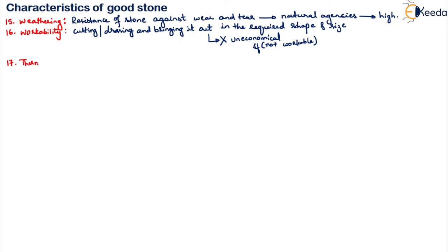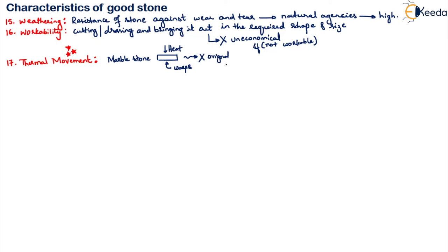The last property is thermal movement. When one side of a marble stone is exposed to heat, that side tends to warp because heat conduction is not uniform, and on cooling the slab will not return to its original shape or size. Thermal movement is therefore very important; otherwise, deterioration or distortion of the stone will take place.